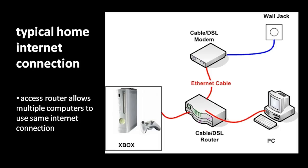Confusingly, these access routers are commonly just called routers, but they're really not like the routers we previously discussed. What an access router allows you to do is share your single internet connection among multiple devices — multiple computers, and maybe other things like your phone or your Xbox. To connect devices to the access router, you can use ethernet cable, though almost all access routers these days are also wireless, so if your device supports a wireless connection, you can just use that. Even if you just have one device you wish to connect to the internet, you still should use an access router for reasons having to do with security, which we'll talk about in a later unit.